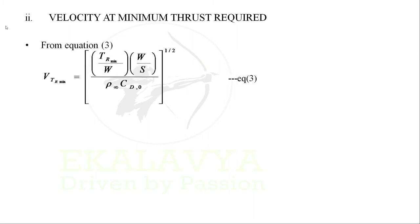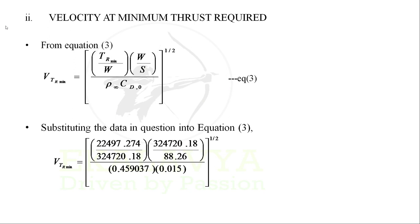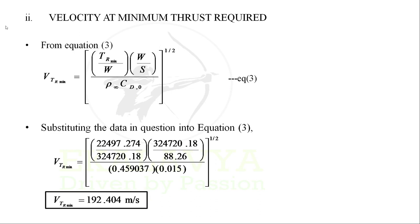Now for velocity at minimum thrust required: from equation 1, by making the second term in the numerator of the RHS equal to zero and substituting T_R minimum obtained using equation 4, we get equation 3. Substituting into equation 3 — T_R minimum as 22497.274 Newton, weight as 324720.18 Newton, wing area as 88.26 meter square, density as 0.459037 kg per meter cube, and CD0 as 0.015 — and simplifying, we get velocity at minimum thrust required as 192.404 meters per second. In this way, without the necessity to draw the thrust required curve, we obtained both values.